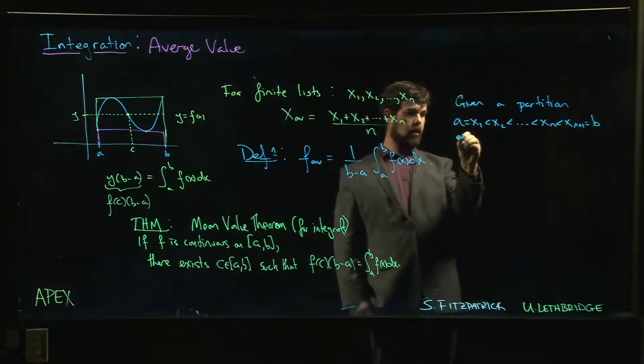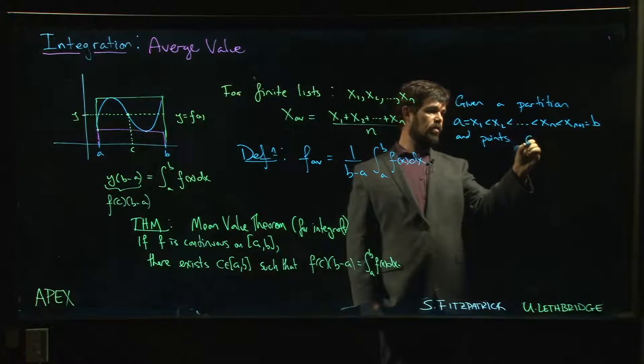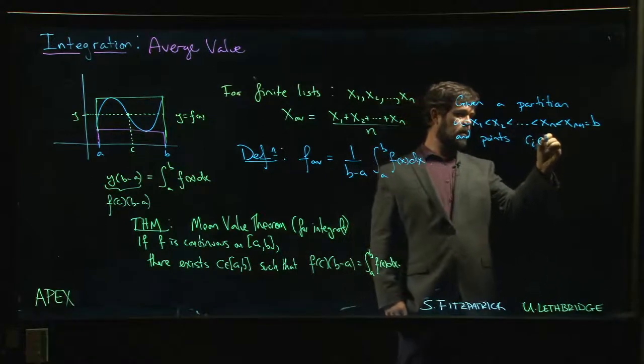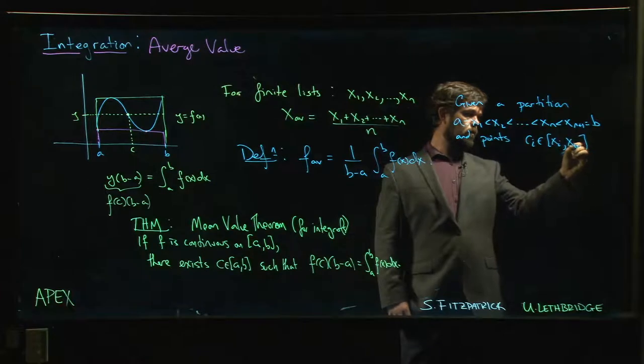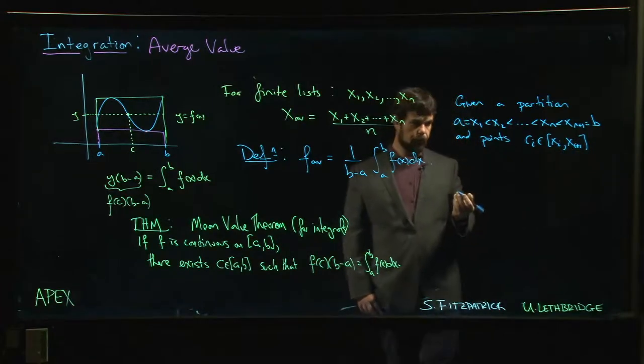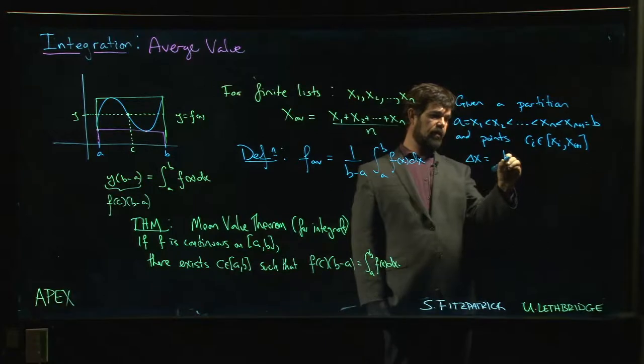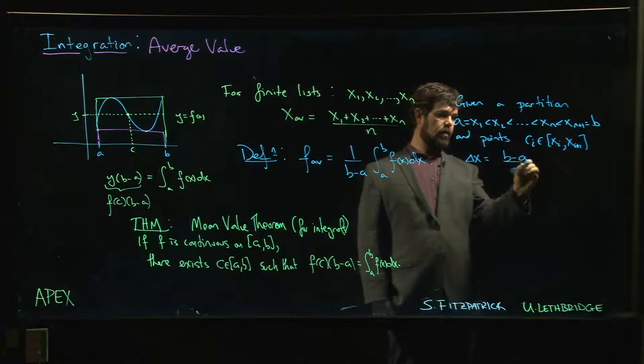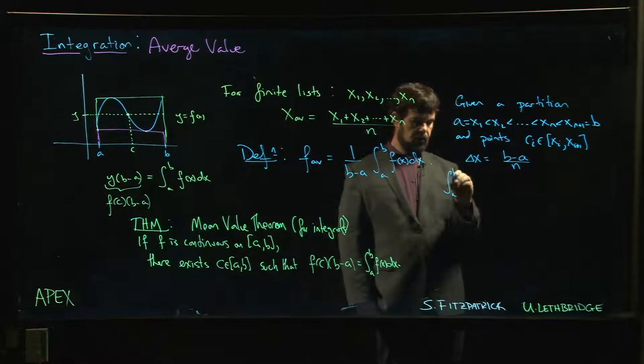...and you choose points - so you choose these points, say c_i in each interval. Well then we know that our Riemann sums - so delta x is going to be, if we do a uniform partition, (b - a)/n. So we know that our integral is approximately...